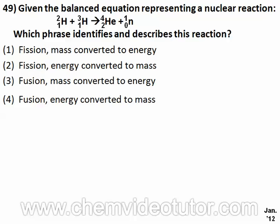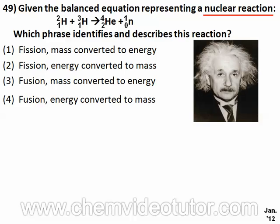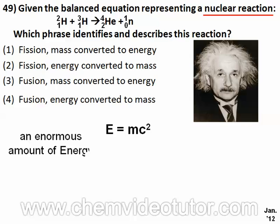The keywords in this question are nuclear reaction. One of the most famous people who helped discover and understand nuclear chemistry was Albert Einstein. Einstein developed the equation E equals MC squared, where E stands for an enormous amount of energy, M stands for mass, and C stands for the speed of light squared.